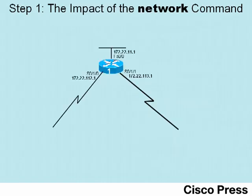As an example, consider the RIP configuration we're about to add to router R1. Notice the network command doesn't list an interface IP address but a class B network number — that's a requirement of the network command. Router R1 looks at the network command and notices all three of its interfaces are in that class B network. So router 1 starts sending RIP updates, listening for incoming RIP updates, and advertising about the subnets connected to those interfaces.